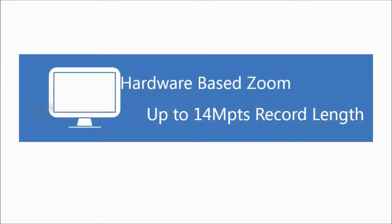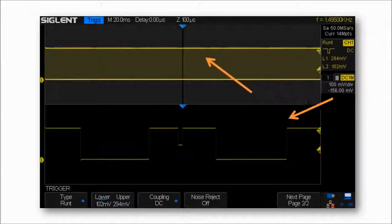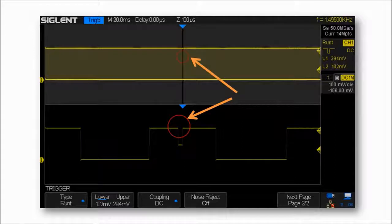By using hardware-based zoom technology and setting the record length up to 14 megapoints, users are able to use high sampling rate to capture more of the signal, and then quickly zoom in to focus on the area of interest.